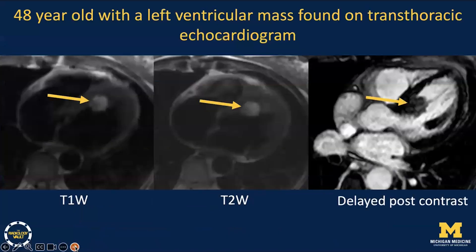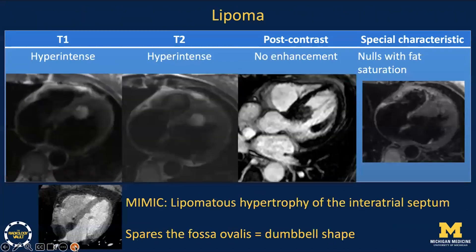This is a 48-year-old with a left ventricular mass on echo. In order to make this diagnosis, a fat saturation sequence is key, as lipomas will null or lose signal with fat saturation. Lipomas are T1 and T2 hyperintense, and they lack appreciable contrast enhancement.